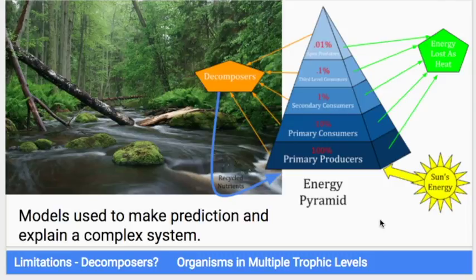So that's the usefulness of a model. However, an energy pyramid like this also has its limitations, as all models do. In this case, the decomposers aren't really represented very well. They're sort of spread out through all of them, and this doesn't show how much energy is going from one trophic level into the decomposers. They're just saying the decomposers are there, we don't know what's happening.